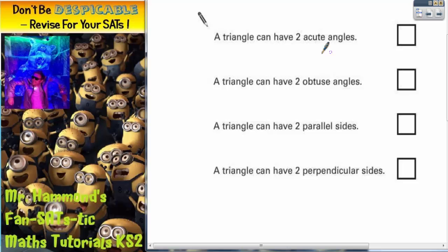A triangle can have two acute angles. Well, acute angles are less than 90 degrees. So if we can just find one example of a triangle with two angles less than 90 degrees, we have shown it as possible. Let's draw a quick sketch, not to scale.